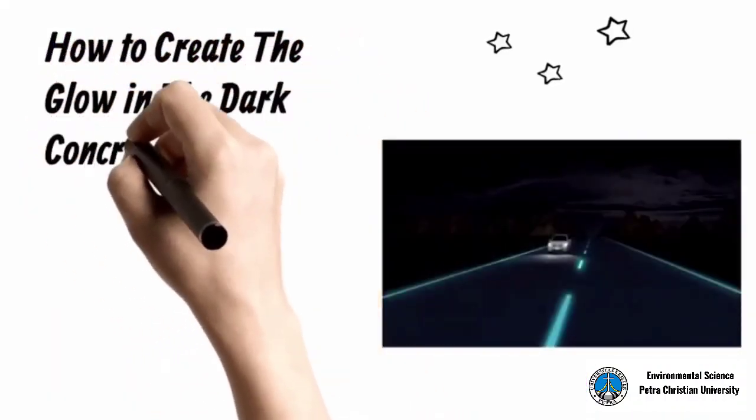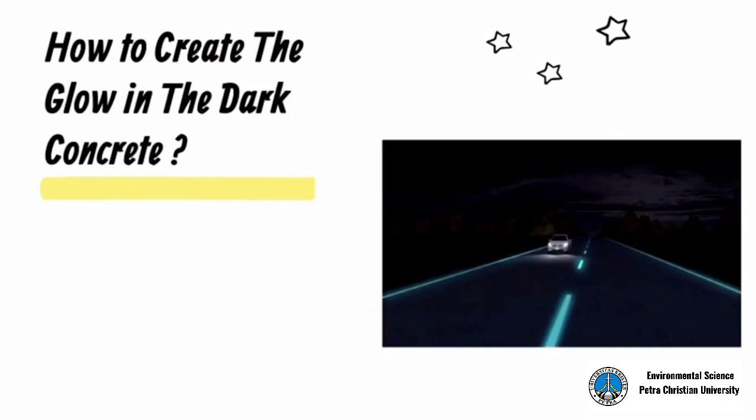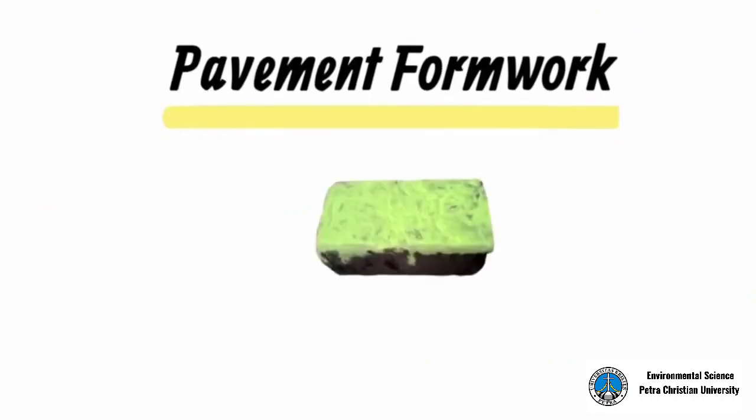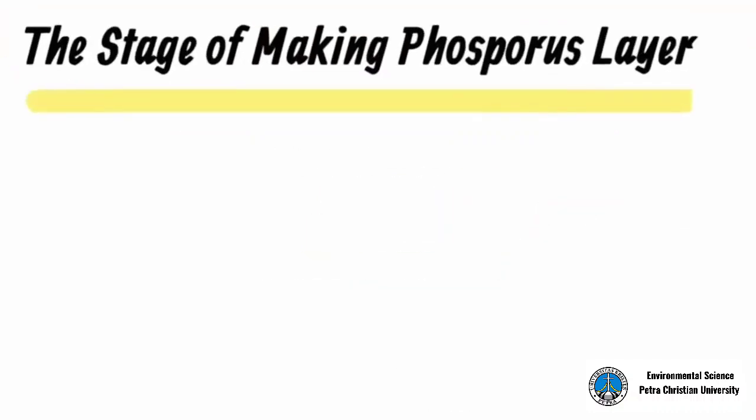To create the glow-in-the-dark concrete, there are two stages that need to be done in the process. The first stage is making the phosphorus layer, and the second stage is making the concrete mixture. For disclaimers, our test method uses pavement formwork with a size of 20 by 10 by 10 centimeters.